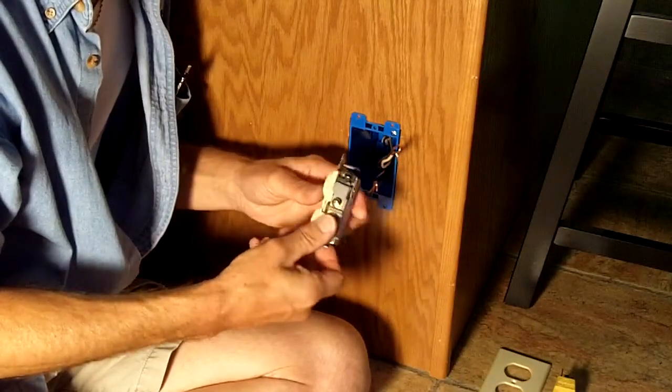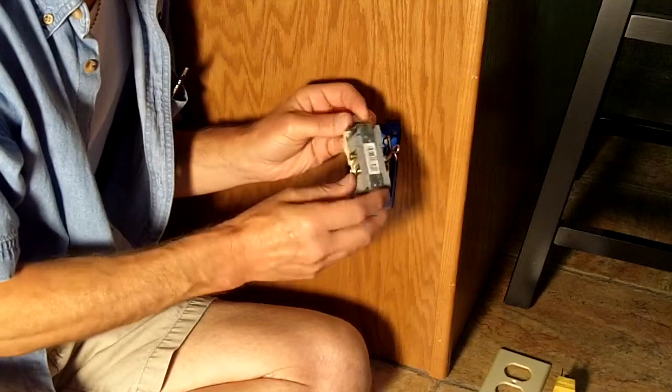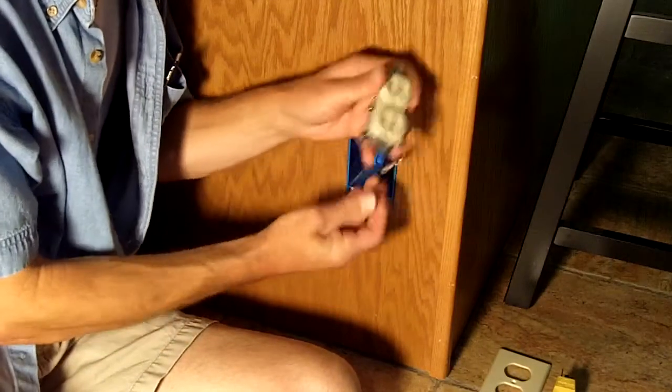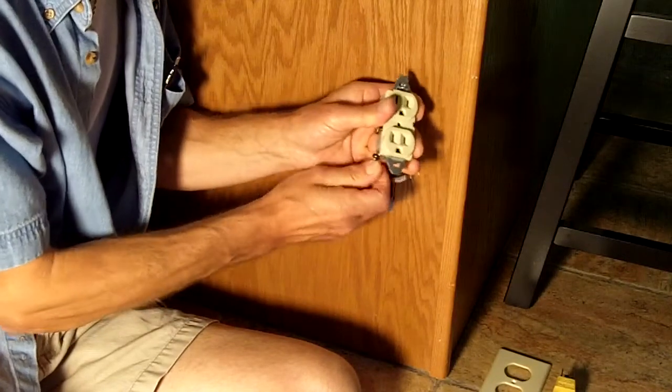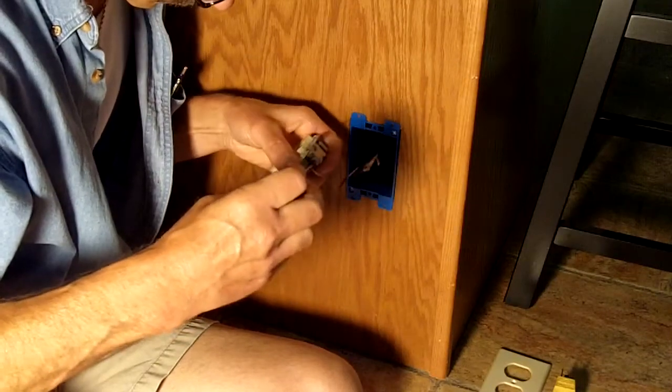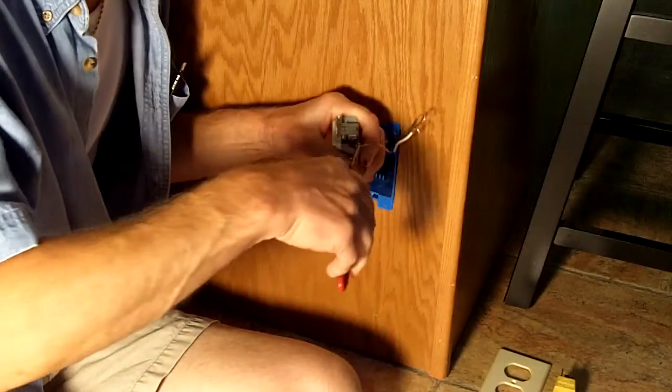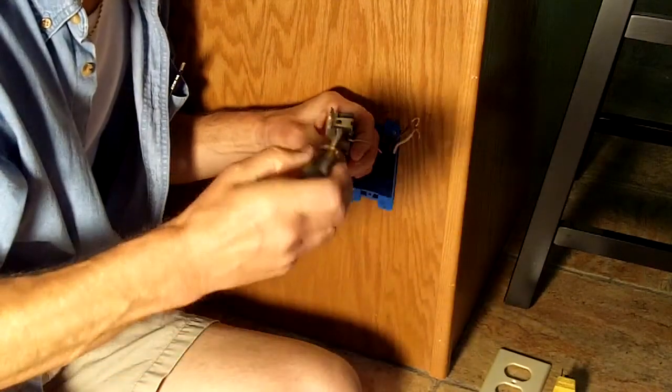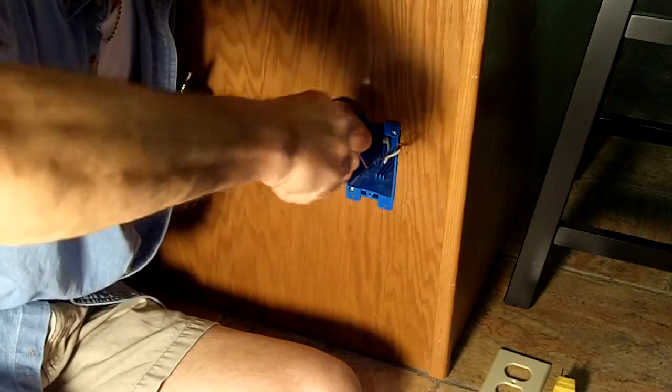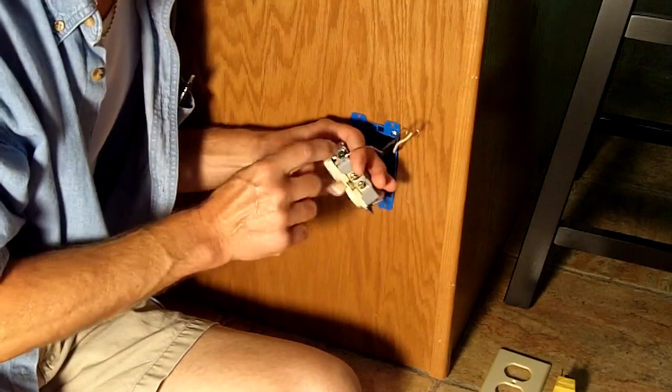We'll do the grounding conductor first. That goes on the green post—that's your ground. It's bonded with the metal frame of the receptacle device. You hook that on there so the wire is wrapped around that post in a clockwise direction, because that's the way the screw turns to tighten it down. If you didn't have that right, you would actually spread the hook too wide. You can use this tool to close that hook up a little bit around the post. Tighten that up nice and snug. You don't want to kill yourself on it but you don't want it to come loose either. We call it snug tight. That's a nice tight hook around that post.